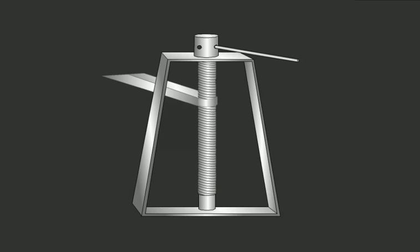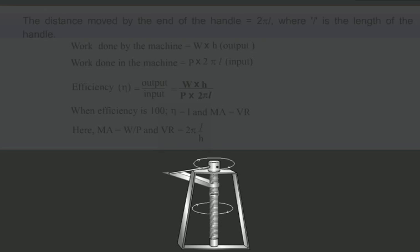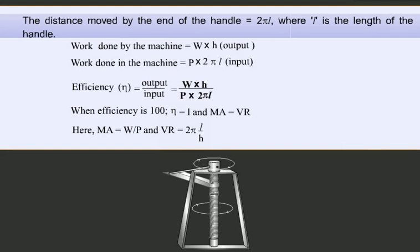Now let the handle be rotated so that the screw makes one complete rotation. The distance moved by the end of the handle is equal to 2πL, where L is the length of the handle.